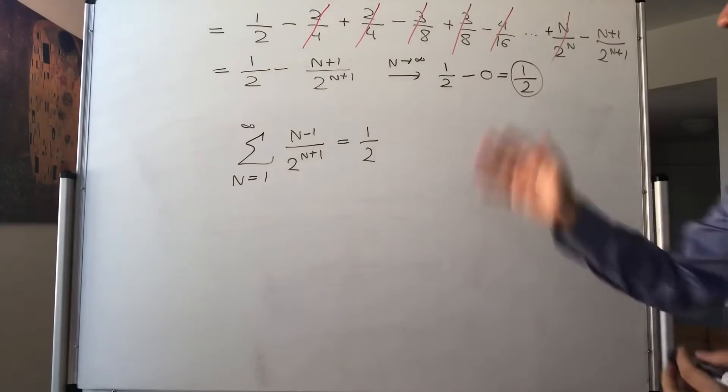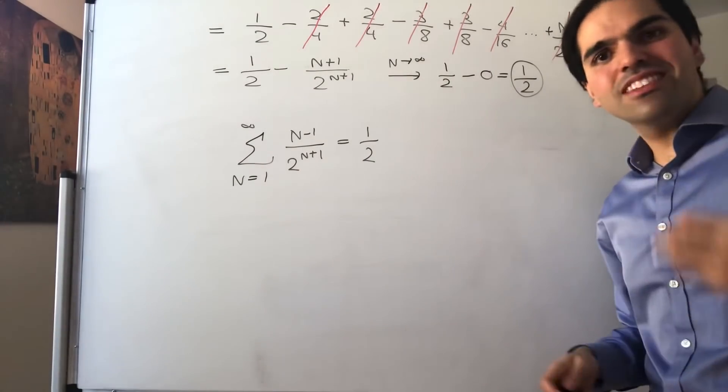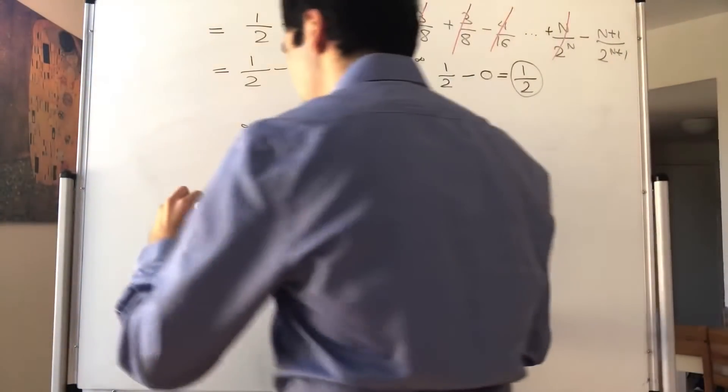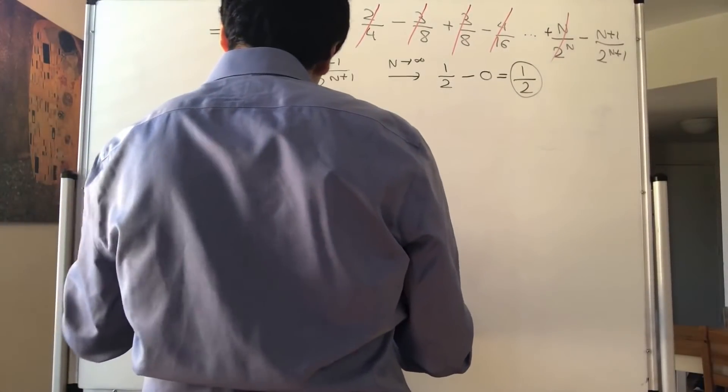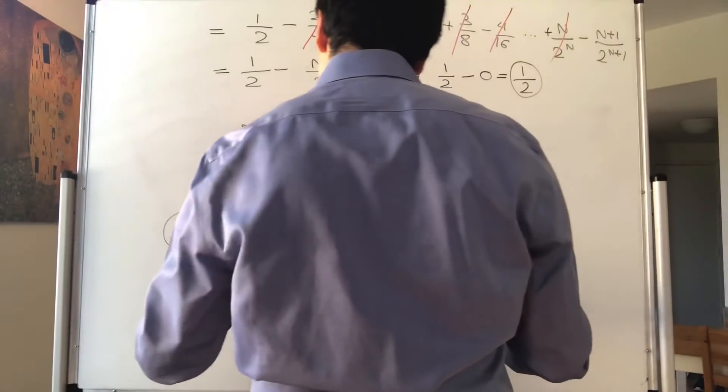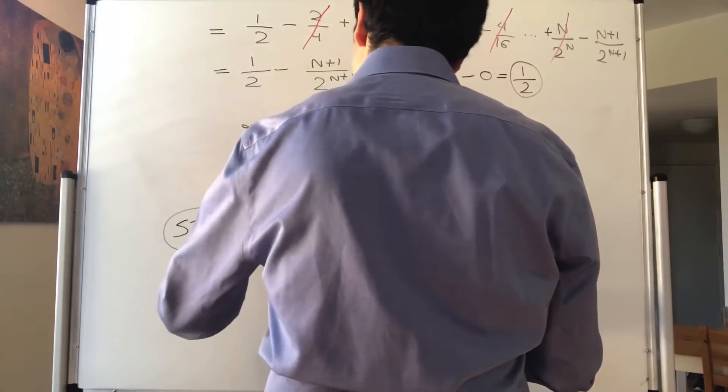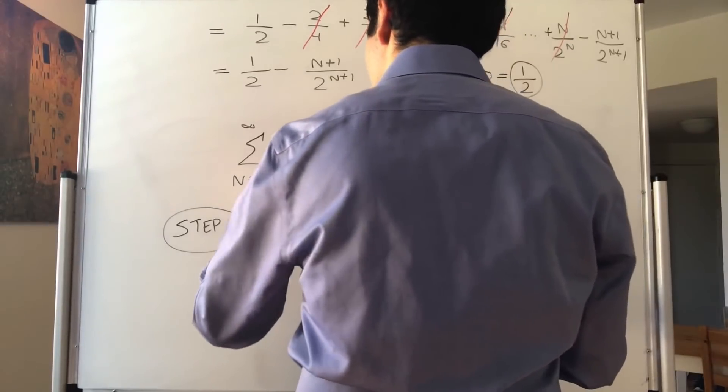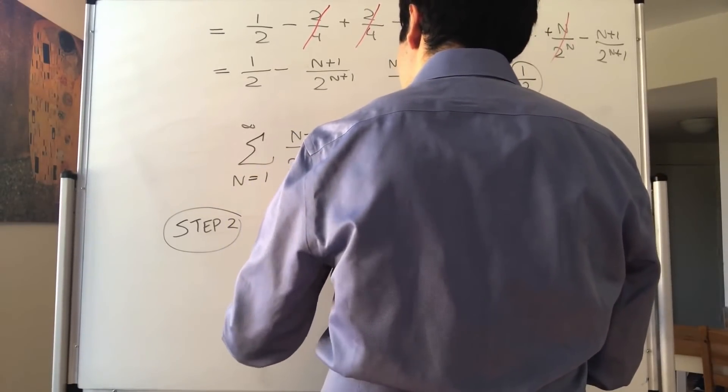Okay, very good. And the question is, what does it have to do with our actual sum? Well, notice the following. So step 2. Well, now we wanted to calculate the sum from 1 to infinity of n over 2 to the n.